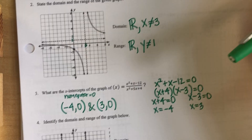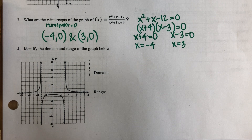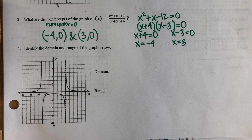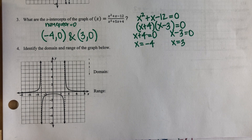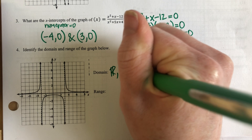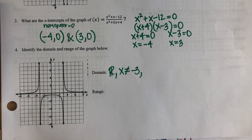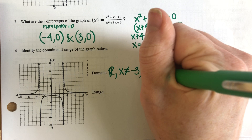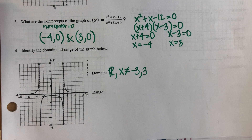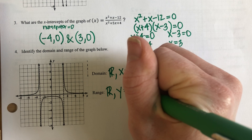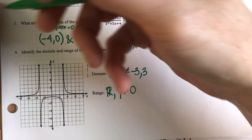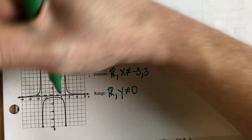The last one on this first page: identify the domain and the range of the given graph below. I'm going to treat this problem just like I did number two. I want to look very carefully from left to right and know what restrictions there are for X. I see this dashed vertical line right here at negative three, and I also see another dashed vertical line at positive three. So that is my domain.